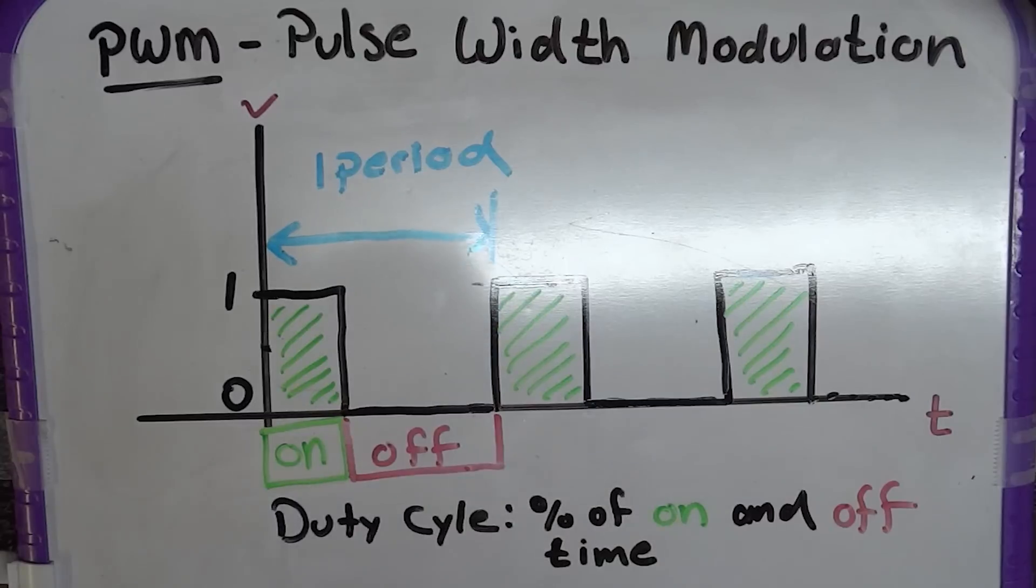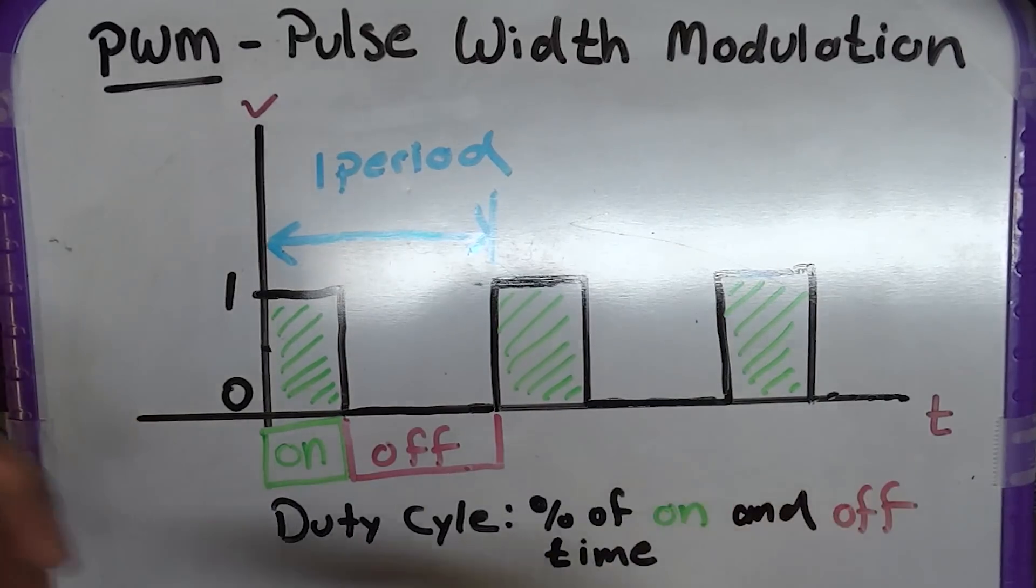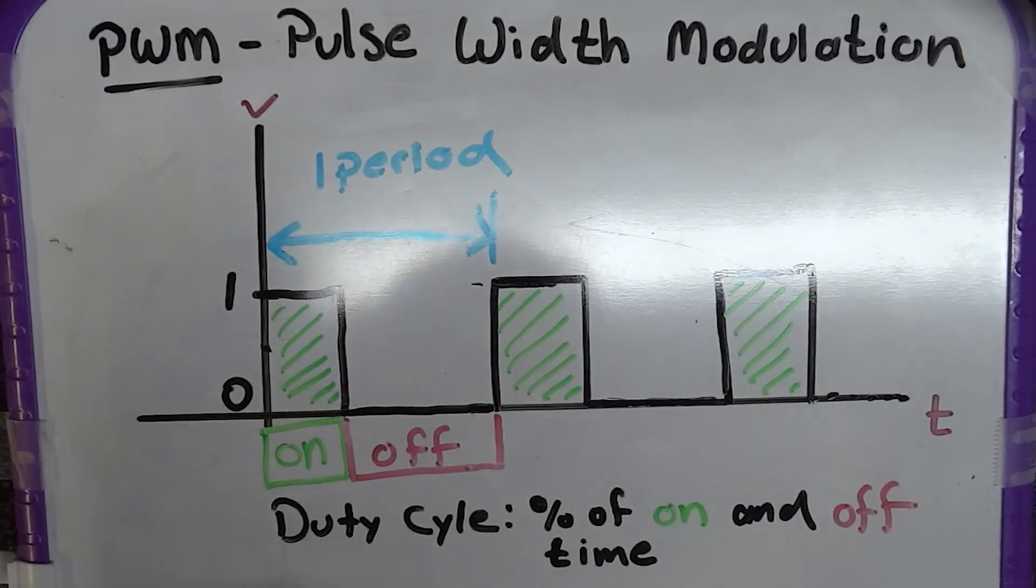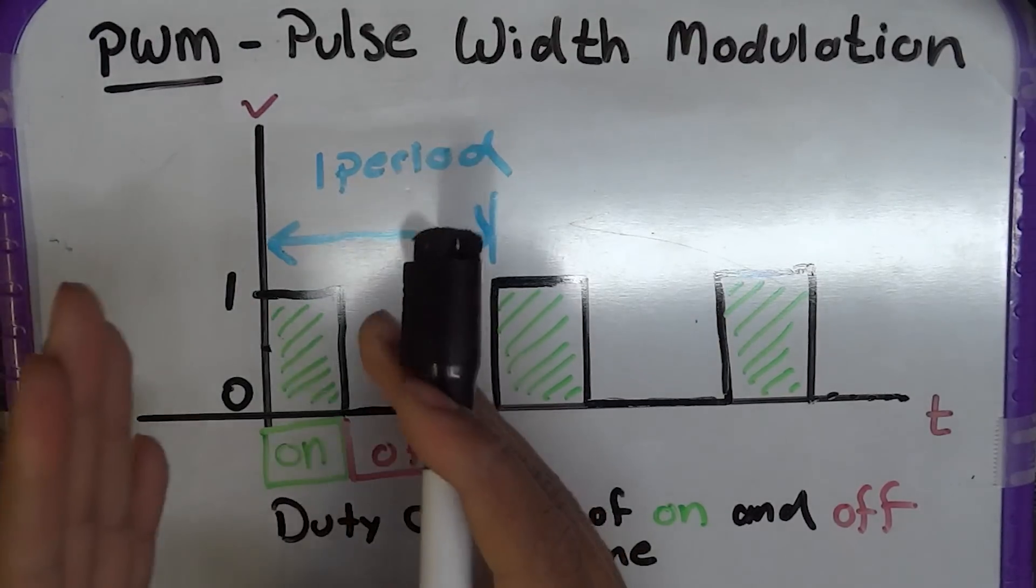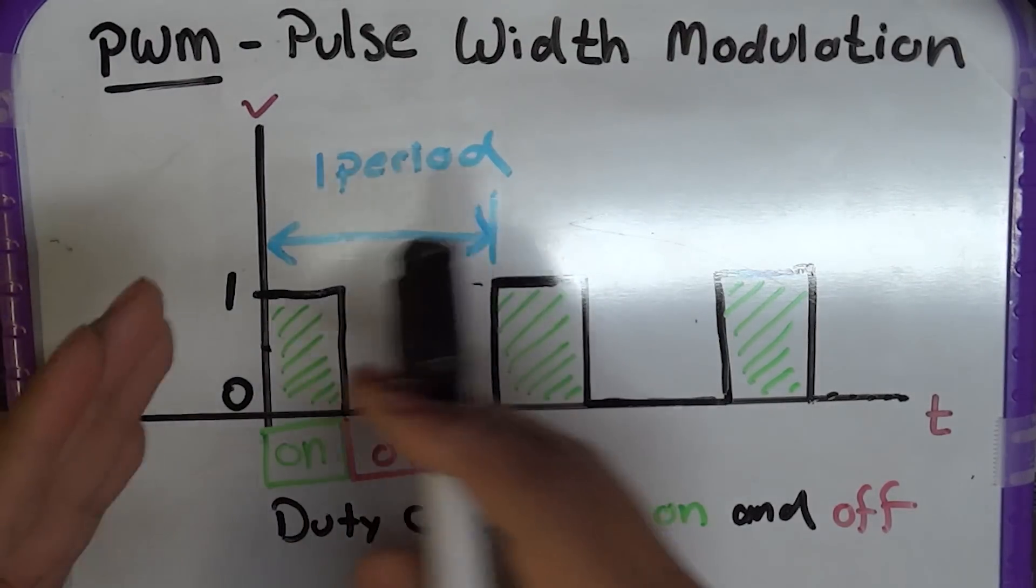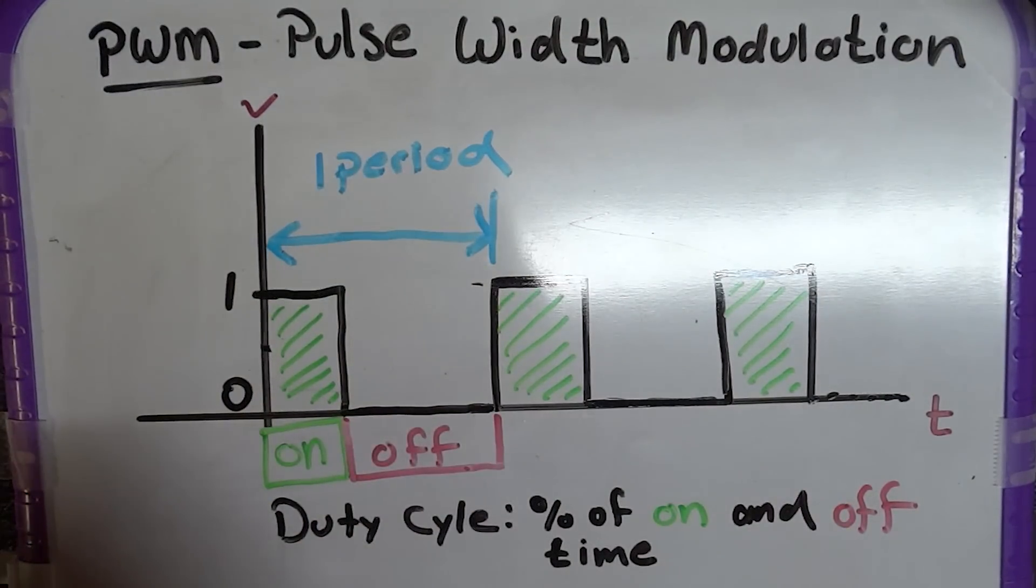It's usually given in a percentage. I haven't really seen it given in any other way, but let's just discuss it as a percentage. So you should know the amount of time that it's on and the amount of time that it's off.